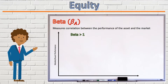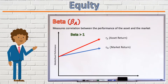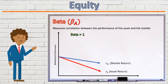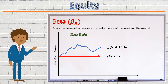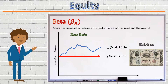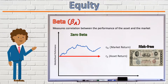A beta greater than 1 indicates an asset that is more volatile than the market. Such assets would experience larger gains than the market during times of economic growth. However, they would lose value quicker than the market in times of economic decline. An asset with a beta of 0 would perform the same way regardless of how the market performs, and is therefore risk-free. Government-backed securities theoretically have a 0 beta, since governments can always print more money in order to pay their contractual capital and interest obligations, regardless of how the economy performs. Therefore, government-backed securities have a 0 beta and yield the risk-free rate of interest.